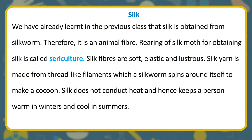Silk. We have already learnt that silk is obtained from silkworm; therefore, it is an animal fiber. Rearing of silk moth for obtaining silk is called sericulture. Silk fibers are soft, elastic, and lustrous. Silk yarn is made from thread-like filaments which a silkworm spins around itself to make a cocoon. Silk does not conduct heat and hence keeps a person warm in winters and cool in summers.